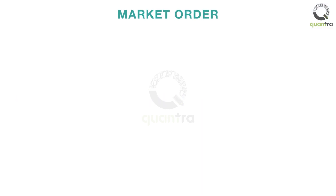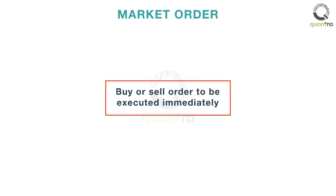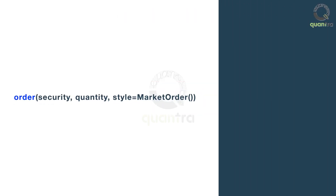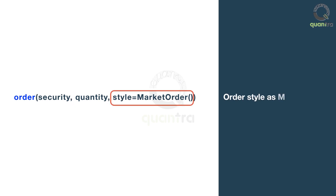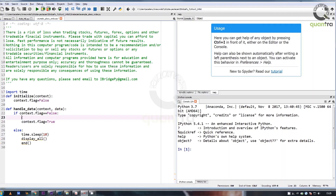There are two different ways to place your orders. The first type is a market order, which is a buy or sell order to be executed immediately at currently quoted prices. The syntax is: order, security, quantity, and the order style should be specified as market order.